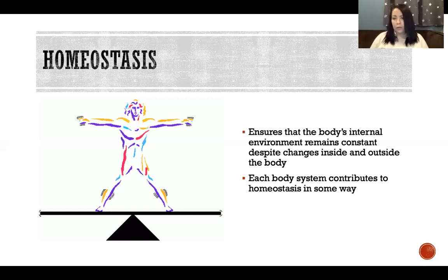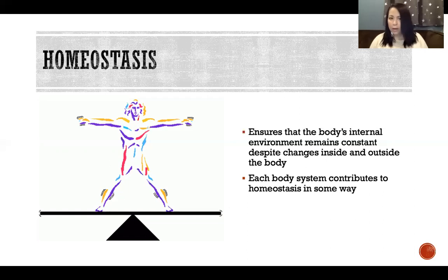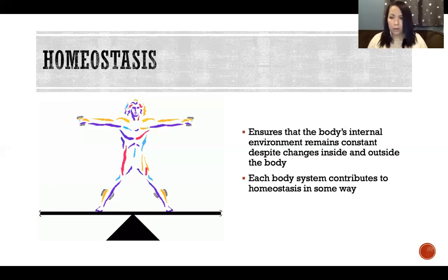Even so, the reproductive system still has functions that are important for our survival and good health. The hormones produced as part of the reproductive system are critical to maintaining our balance. All of the systems in the body are working together to keep us alive and to help us maintain our health, balance, and homeostasis of the many different functions in the body.